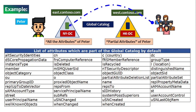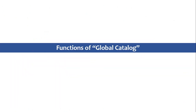These are some of the partial attributes which by default are held by every Global Catalog for every object in the entire forest. So every Global Catalog will hold these attributes of every object in the entire forest. Now let's understand why we require Global Catalog and what are the functions of Global Catalog.